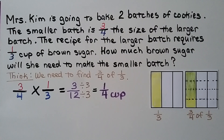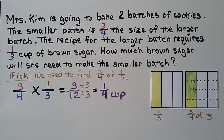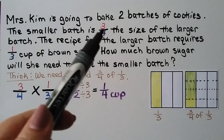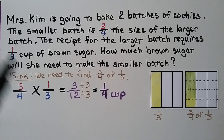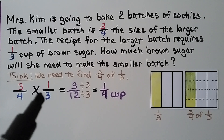Mrs. Kim is going to bake two batches of cookies. The smaller batch is three-fourths the size of the larger batch, and the recipe for the larger batch requires one-third cup of brown sugar. How much brown sugar does she need for the smaller batch? We need to find three-fourths of one-third: three-fourths times one-third.